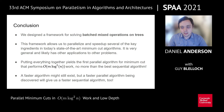In conclusion, we designed a framework for solving batched mixed operations on trees. This framework allowed us to parallelize and speed up several of the key ingredients used in today's state-of-the-art minimum cut algorithms, all based on Karger's algorithm. It's very general, and this framework likely has applications to other problems. When we put everything together, we obtain the first parallel algorithm for minimum cut that performs just m log squared n work and poly log depth, which is no more work than the best sequential algorithm. Of course, this isn't the end of the game for minimum cut — a faster algorithm might still exist, but if we find a faster parallel algorithm, we'll also be finding a faster sequential algorithm at the same time. Thanks for listening, and let me know if you have any questions.